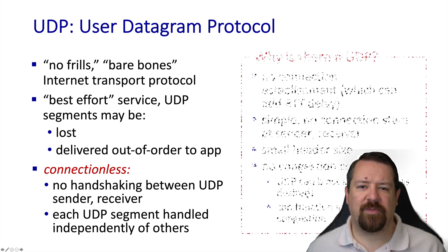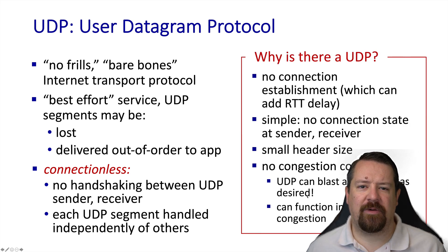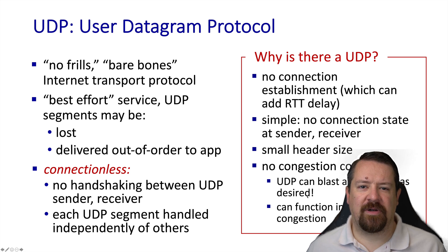So why would we want a transport protocol without any reliability? Well, for one thing, it's fast. We don't have to wait for a connection to be established before we can transfer data. It's low overhead, so clients and servers can handle many, many connections simultaneously. It's efficient in terms of keeping the header size small, and it won't be forced to slow down by congestion, which can be a positive or negative depending on the context.